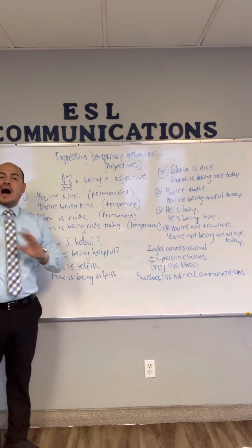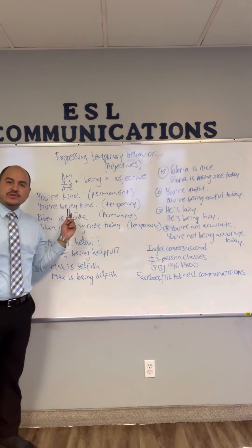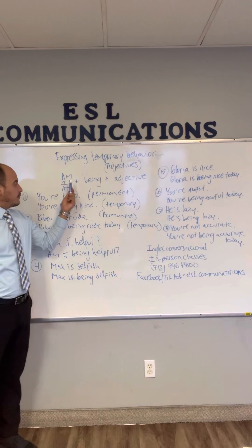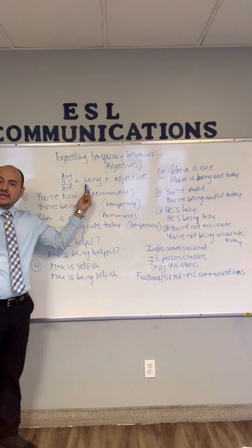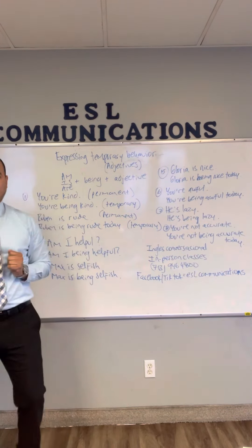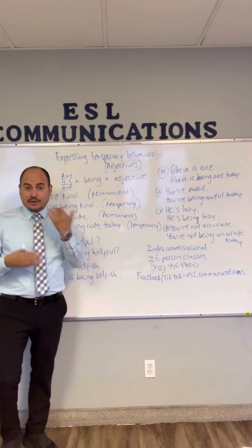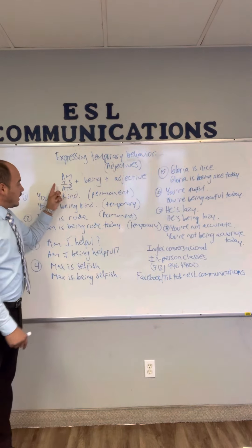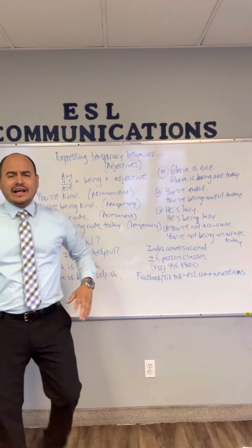So, how do we do this? Como hacemos esto? You need to use the verb 'to be' in present — am, is, are — followed by 'being,' que te da esa idea de que estás siendo así, te estás portando así, and then the adjective. Am, is, are, being, and then the adjective — el comportamiento que la persona esté teniendo.